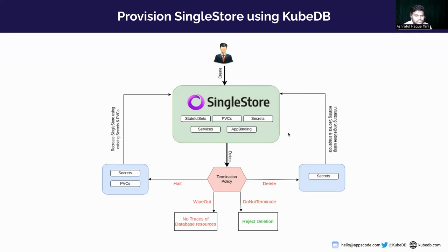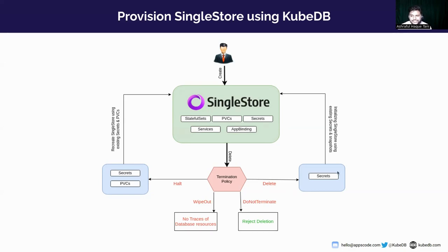If you want to delete your SingleStore cluster, we have termination policies. If you want to delete all resources of the cluster, you can use WipeOut as the termination policy. If you want to keep secrets and persistent volumes, you can use Halt — and if you recreate the cluster, it will start with the existing secret and persistent volume. If you want to keep only the secret, use the Delete termination policy. And if you want to prevent accidental deletion of your cluster, you can use DoNotTerminate, which will prevent any kind of deletion of cluster resources.